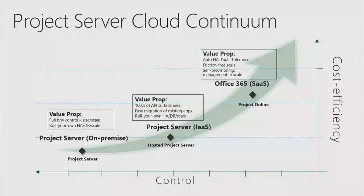Looking at the graph with control on the lower axis and cost efficiency on the y-axis: on-premise gives you the most control — you choose how everything runs, all the customizations, high availability, clustered SQL, multiple middle layers and front ends. The problem is you aim for, say, 5,000 users but your hardware can handle 10,000 — you're paying for excess capacity and support you don't need. Also, a typical server is only heavily used during business hours, so you're paying for it to sit idle two-thirds of the time.